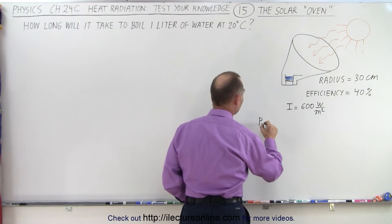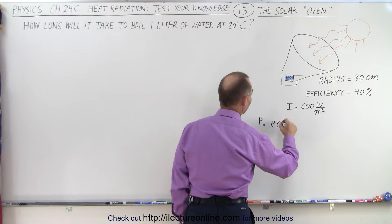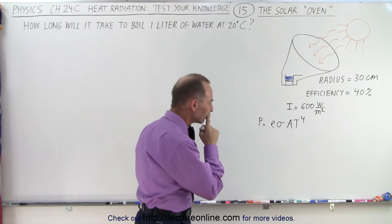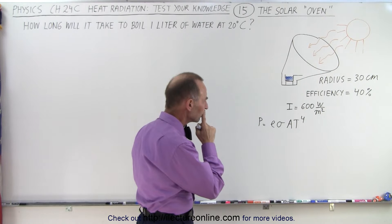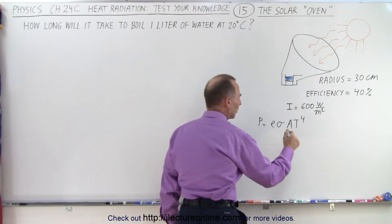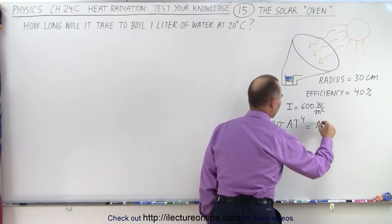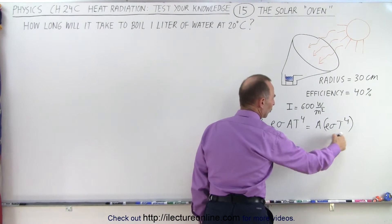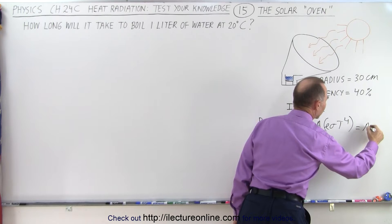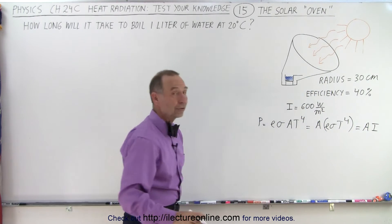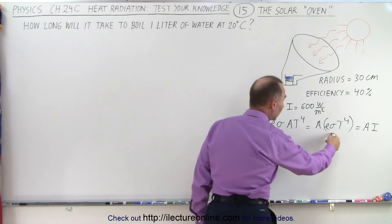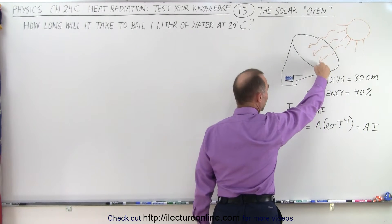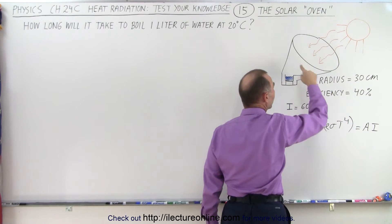And notice that we can rewrite this, that this is equal to area times εσT to the fourth power. And notice that this portion of that equation is equal to the intensity. That's equal to area times the intensity. So we can use that equation because we don't know these particular parameters, but we do know this.